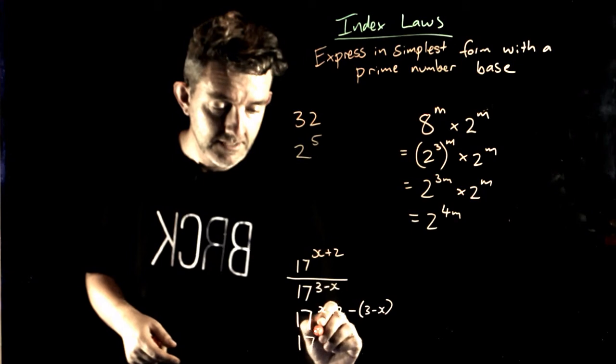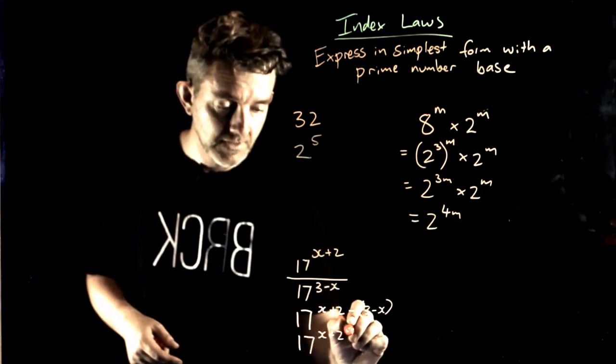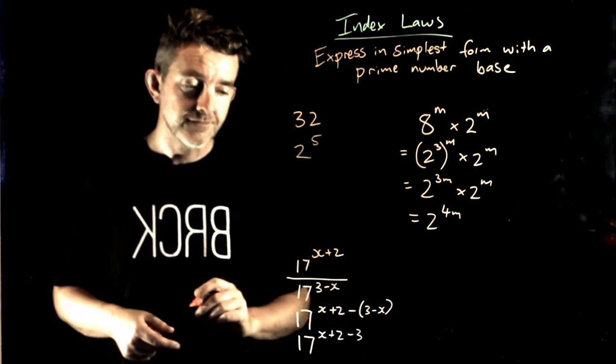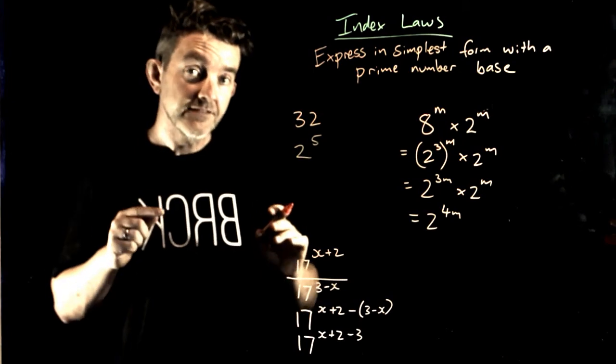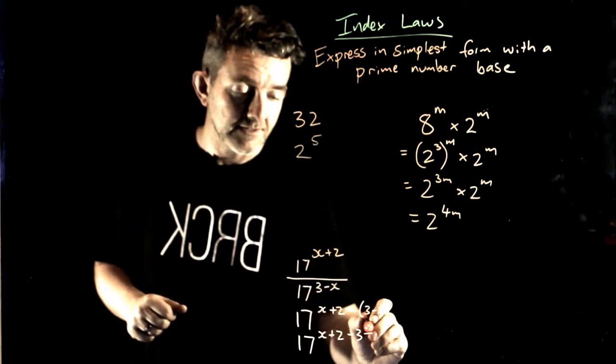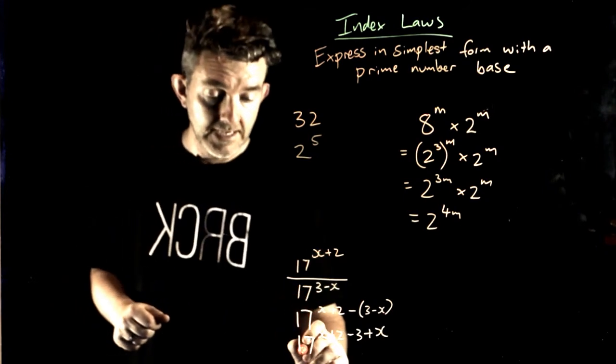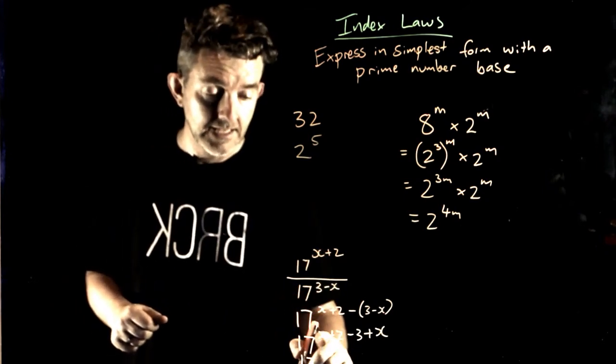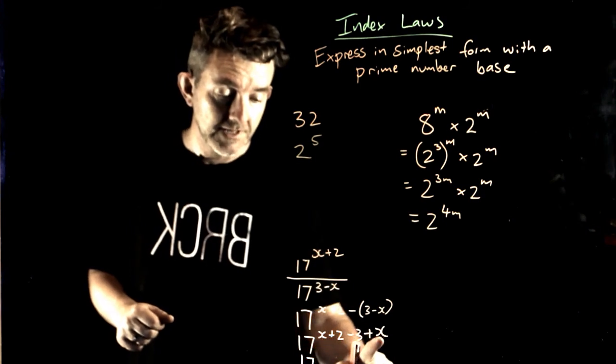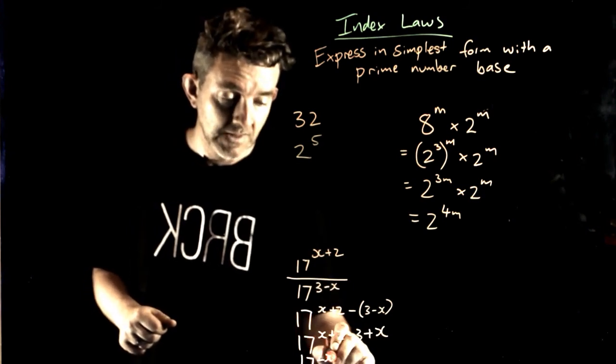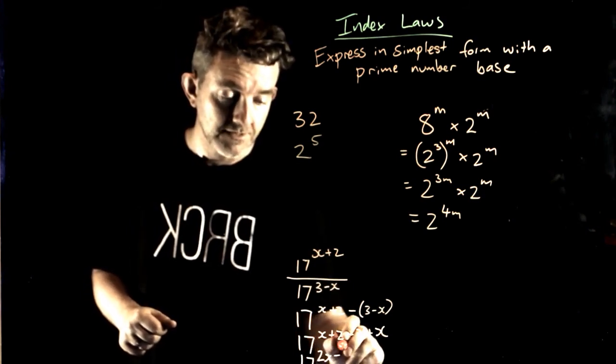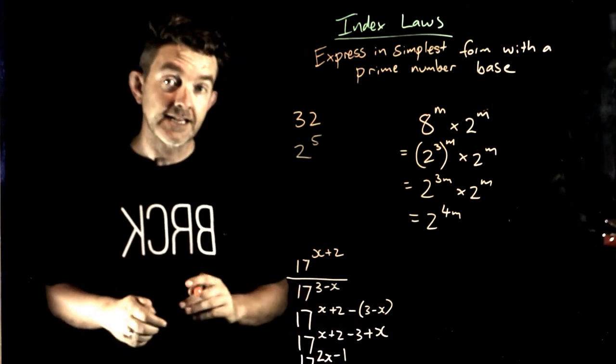17, power of x plus 2, minus 3, straightforward. Negative negative x is plus x. So, my answer is 17 to the power of 2x minus 1. x plus x is 2x, and 2 take 3 is minus 1. And that's my final answer there.